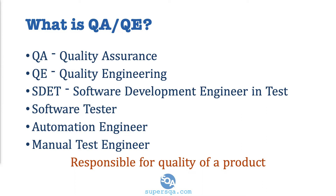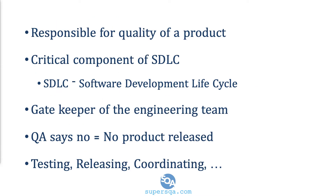There might be subtle differences, but they talk about the same thing. A QA is responsible for the quality of a product. That says a lot right there. It's a critical component of the SDLC, which stands for software development life cycle.